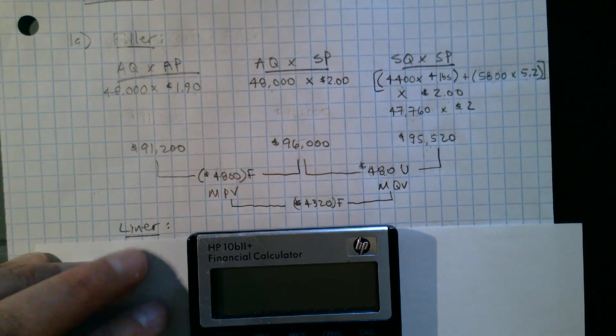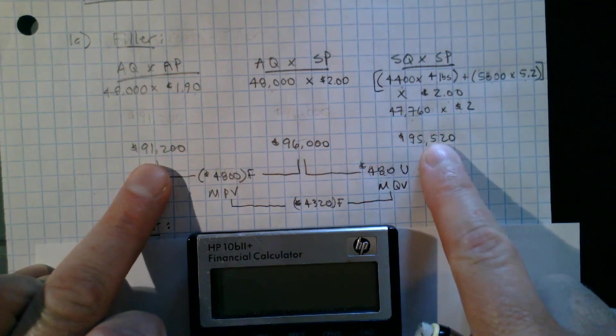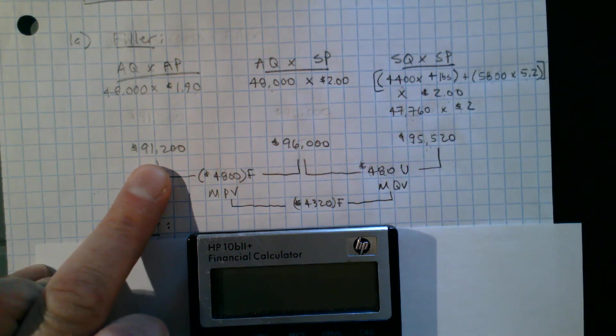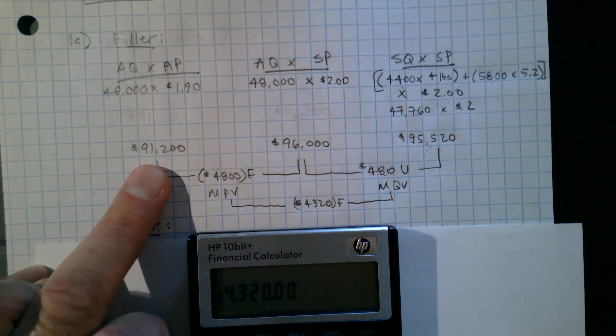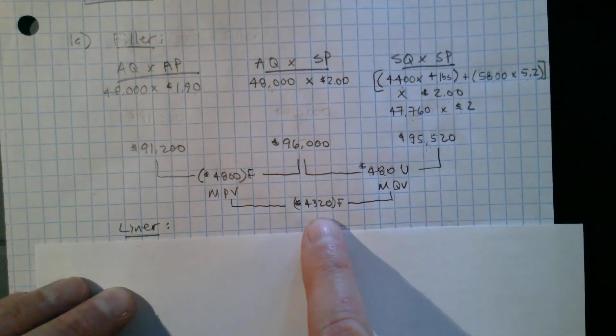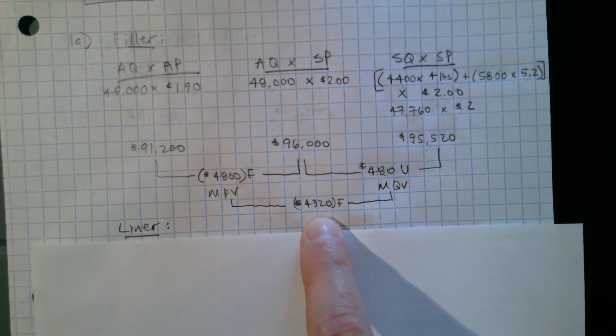Now I want to take a note here. So I can also compare the outer two goalposts. So I can take $91,200 minus $95,520, and I get negative $4,320, which is this. So I can double check my math.